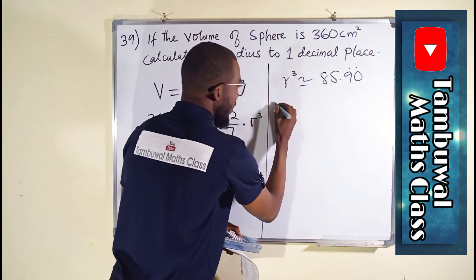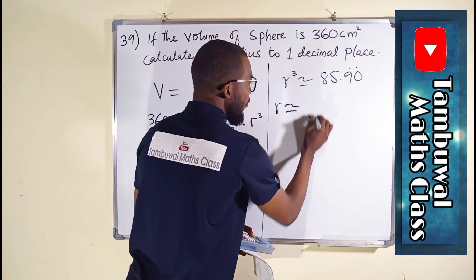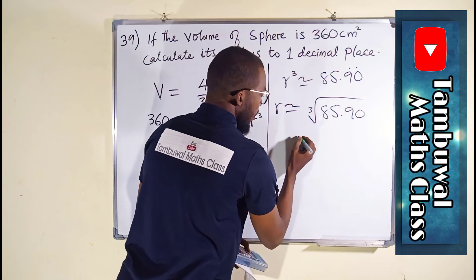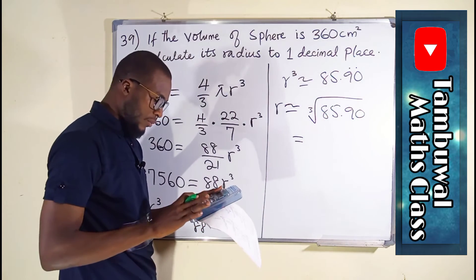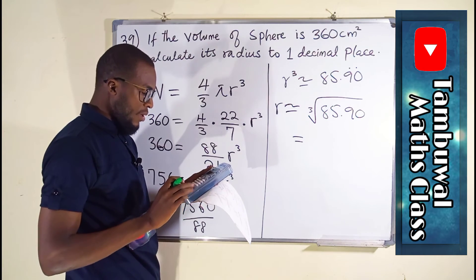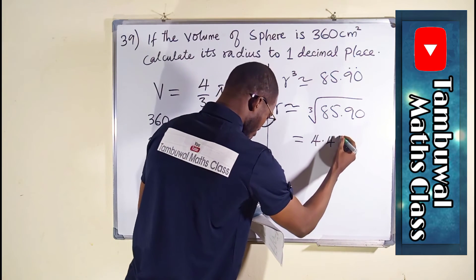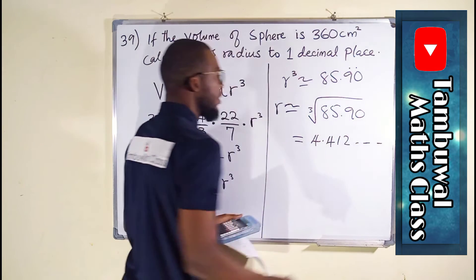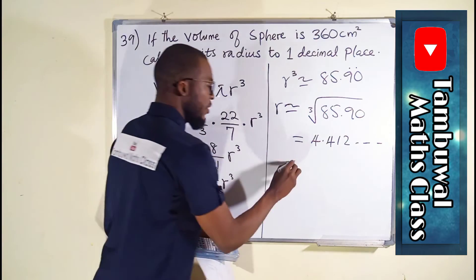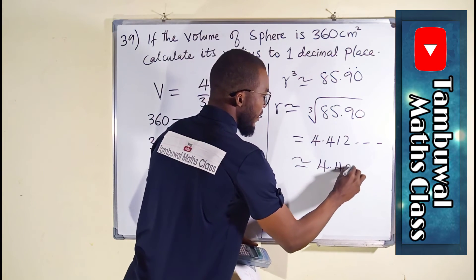To find r alone, we take the cube root of 85.90. This gives us ∛85.90 = 4.412 and so on. But the question asks for one decimal place, so r ≈ 4.4 cm.